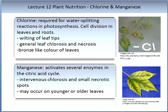Chloride is required for the water splitting reactions in photosynthesis. It is also required in cell division in leaves and roots. When chloride is deficient in plants, you can see wilting of leaf tips, general leaf chlorosis and necrosis, and a bronze-like colour of leaves. Here is an image of a tomato leaf with chlorine deficiency.